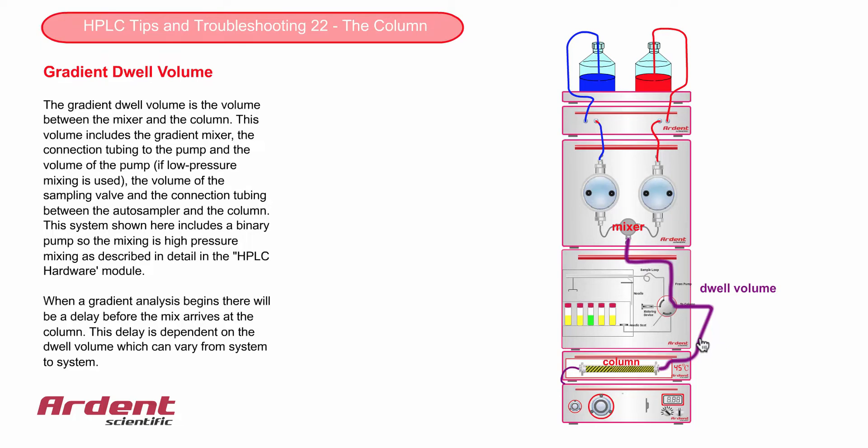There will always be a dwell volume, but it is much reduced when using a binary pump. This is because the mixer is always on the high pressure side of the pump, and so the dwell volume does not include the volume of the pump itself, which could be up to 1 mL.